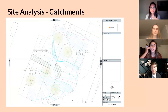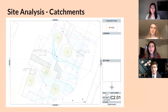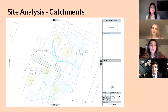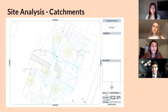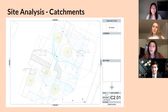We wanted to get a numerical representation of what was actually happening with the water on site, so we modeled the site in Civil 3D and used the water drop analysis feature. That gives you an outline of where water runs during a stormwater event. Using those pathlines — shown in light blue — we outlined three catchments where the water pools, shown in pink. We found the area of those catchments and calculated the runoff coefficient for each.